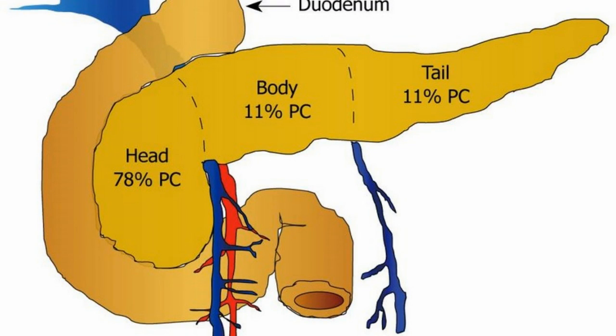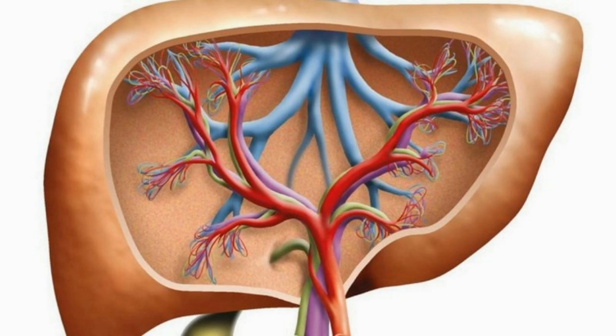Pancreatic cancer and pancreatitis are two different ailments that affect the pancreas. The pancreas is an abdominal organ situated below the stomach. It secretes enzymes for food digestion, including exocrine function, and hormones for blood sugar control, such as insulin and glucagon.